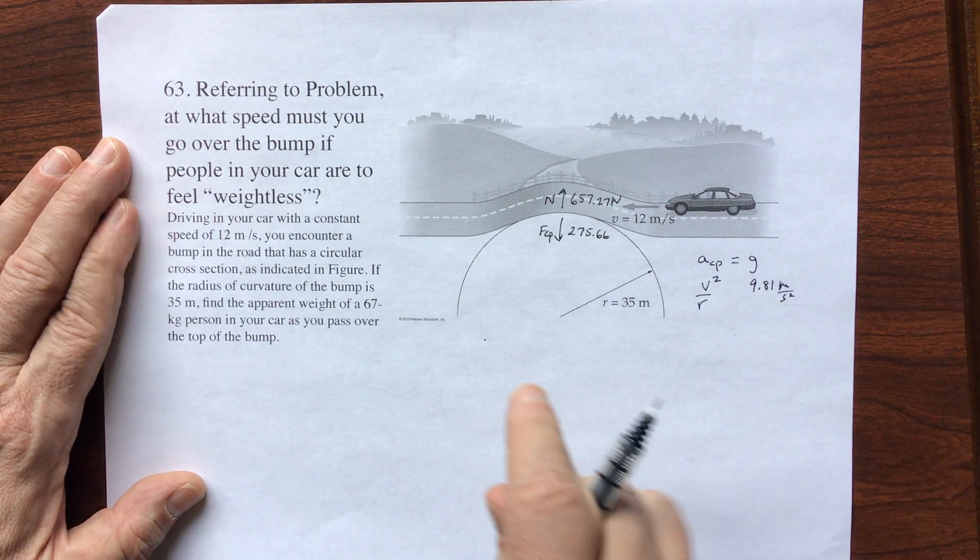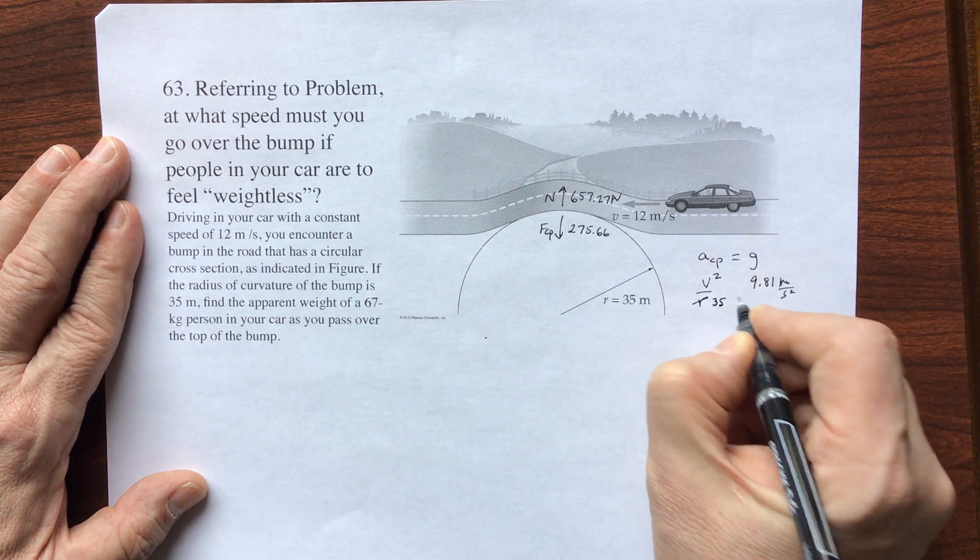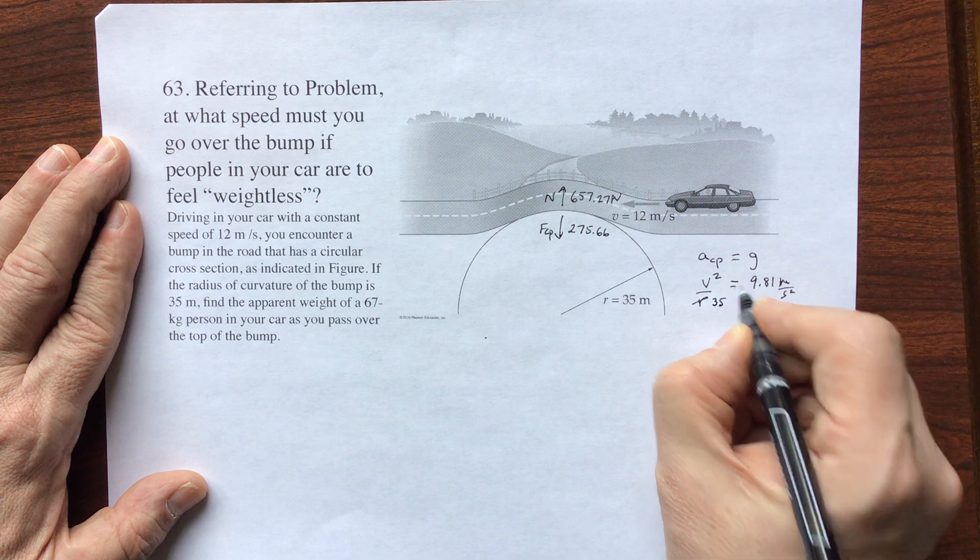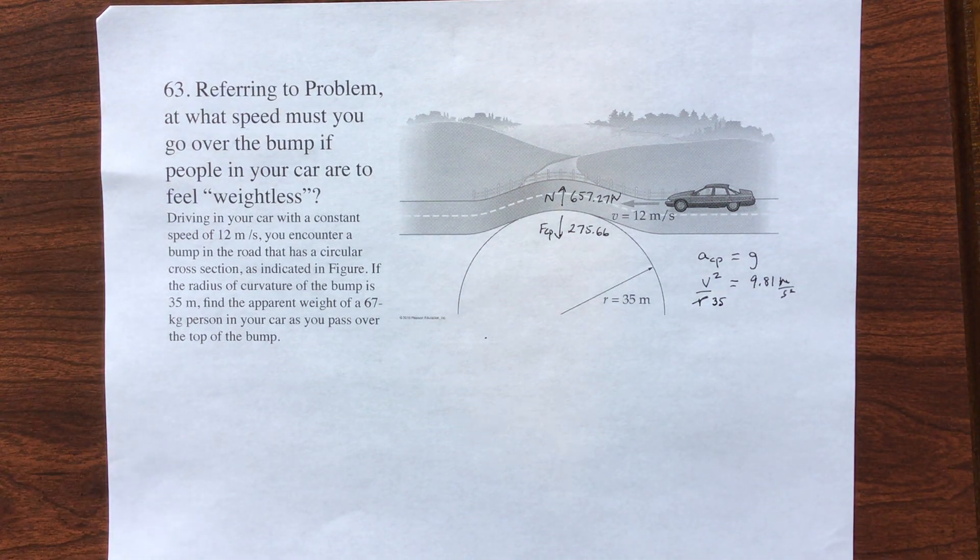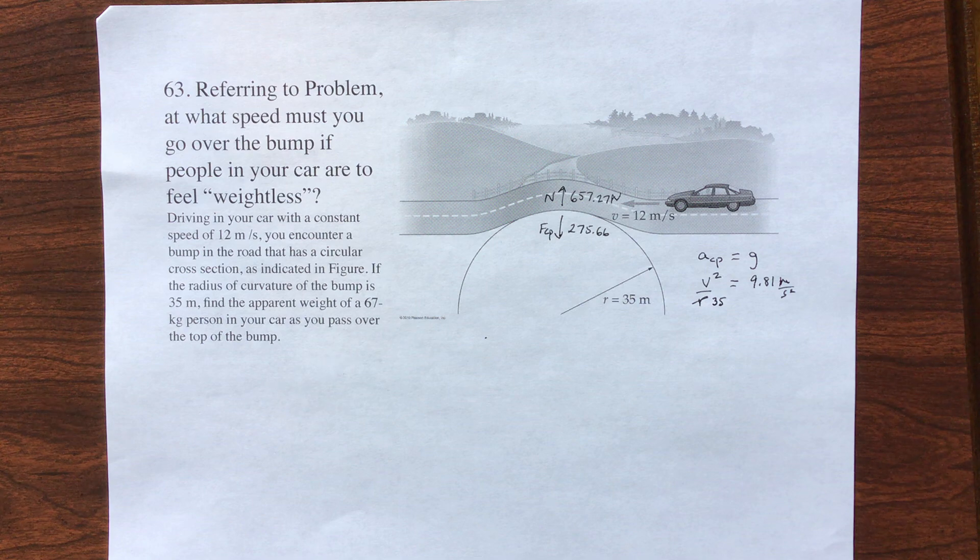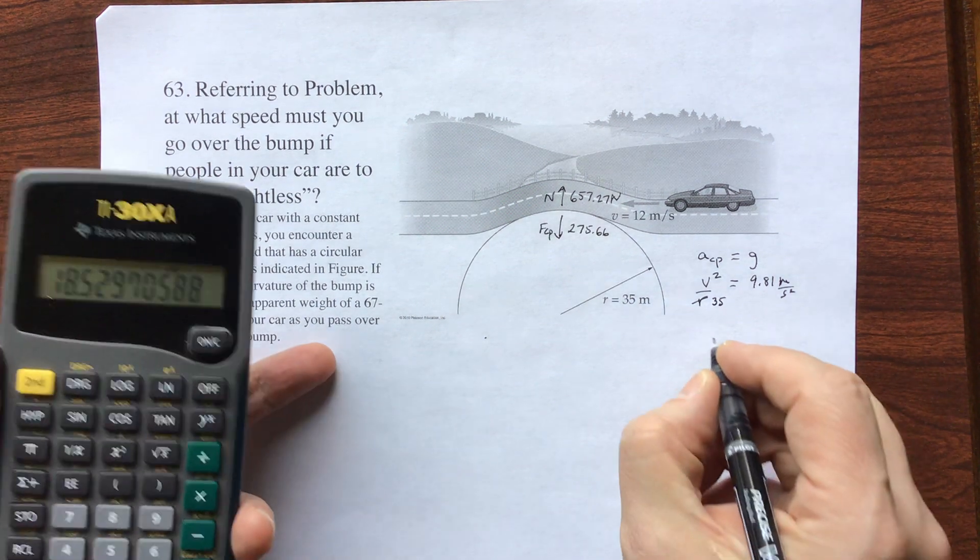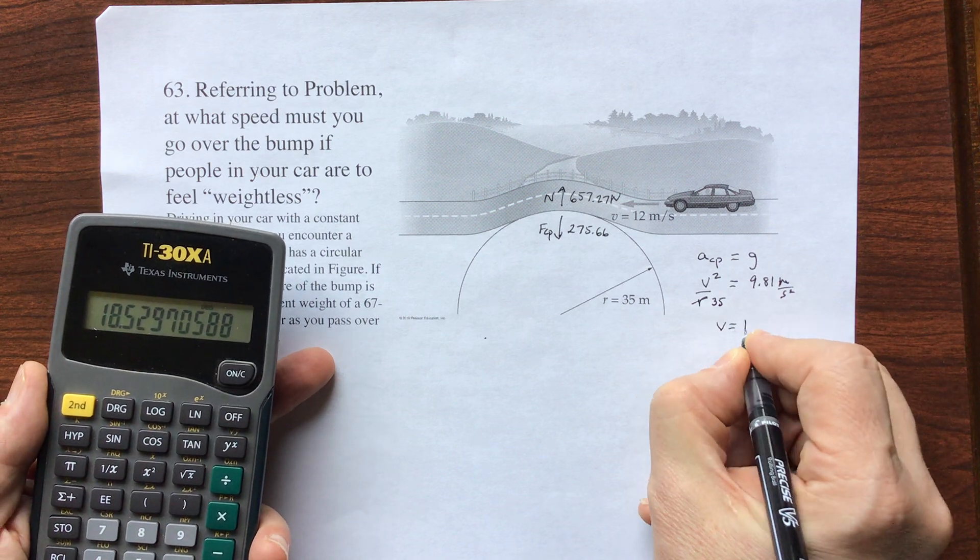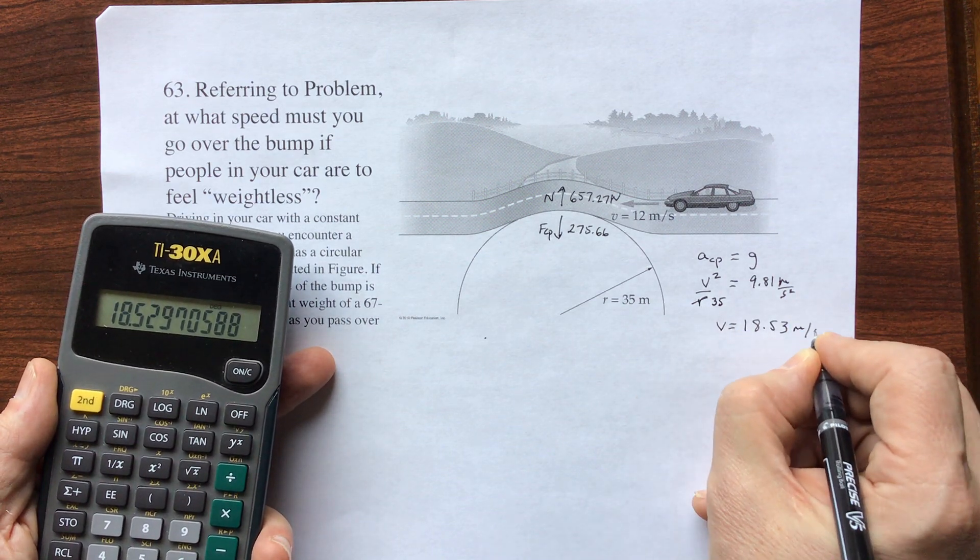And I know that the radius is 35, so this is 35. So I'm going to multiply 9.81 by 35, and then do a square root. And I have velocity equals 18.53 meters per second.